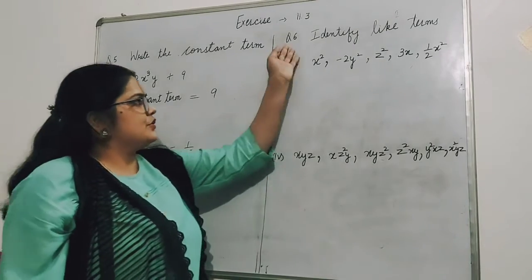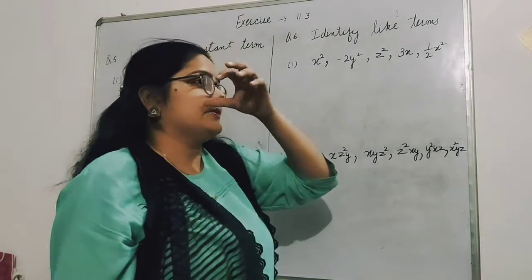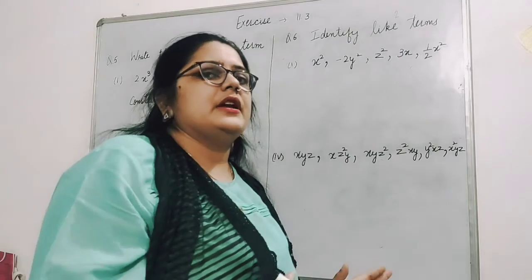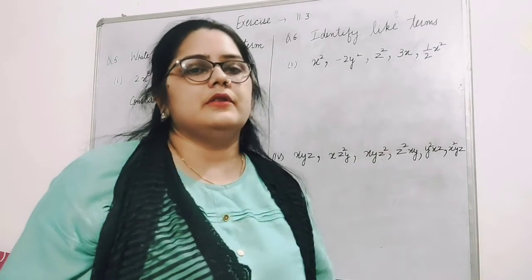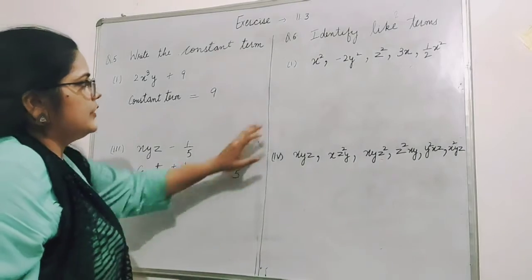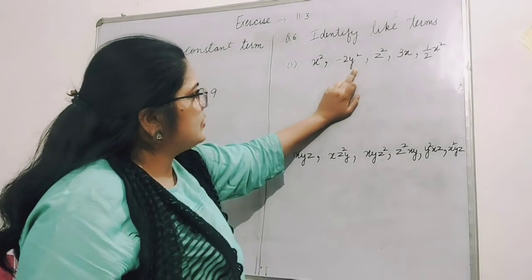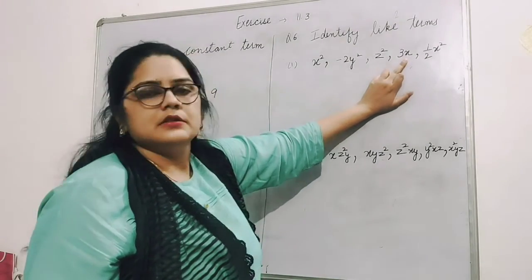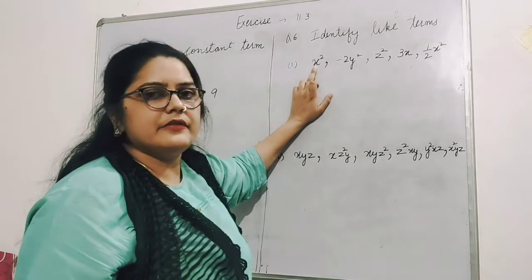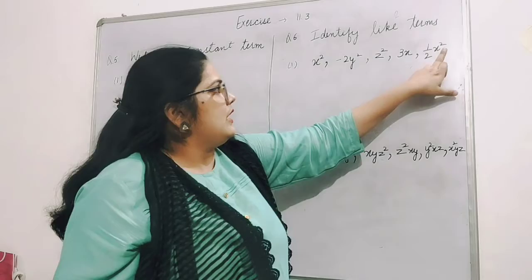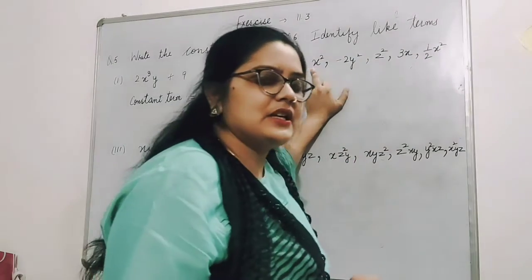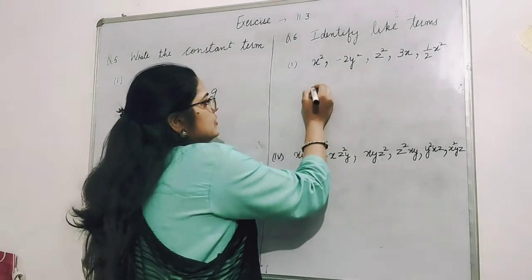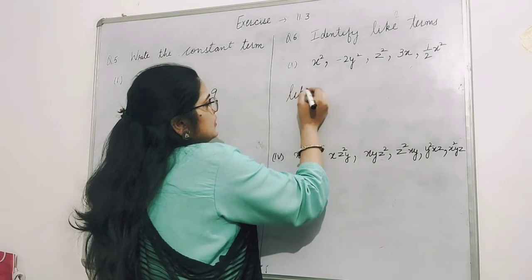Let's try to do question number 6 yourself: identify like terms. The concept of like terms - the number of variables and powers should be the same. You see here x², -2y², y², z² - look at the variables, not the coefficients. So which are the like terms?